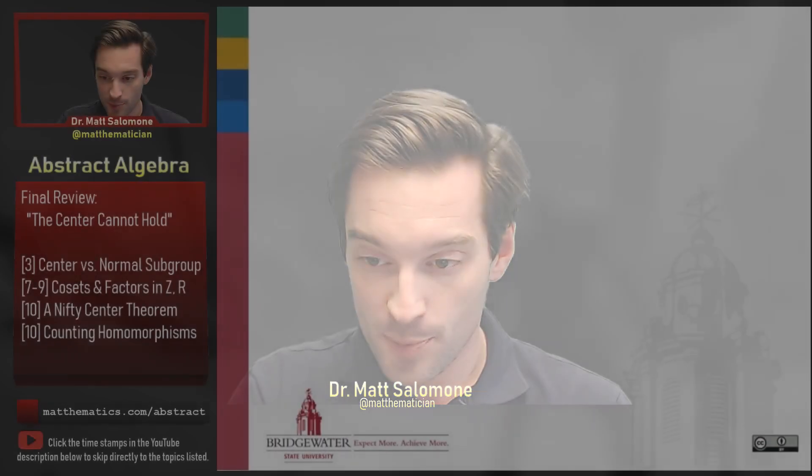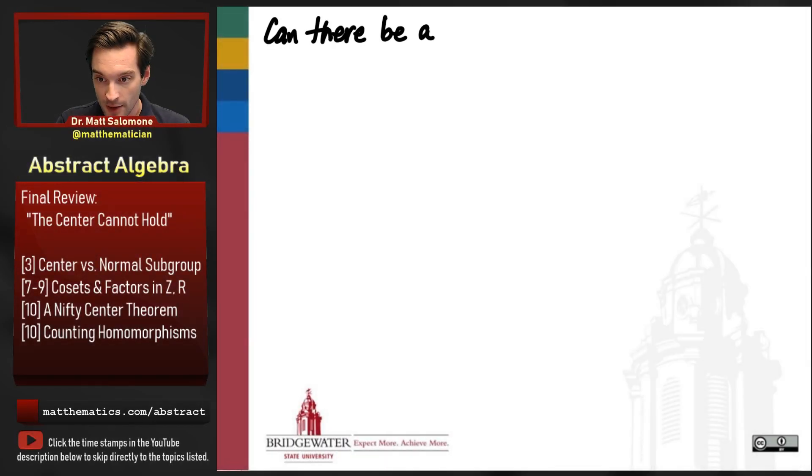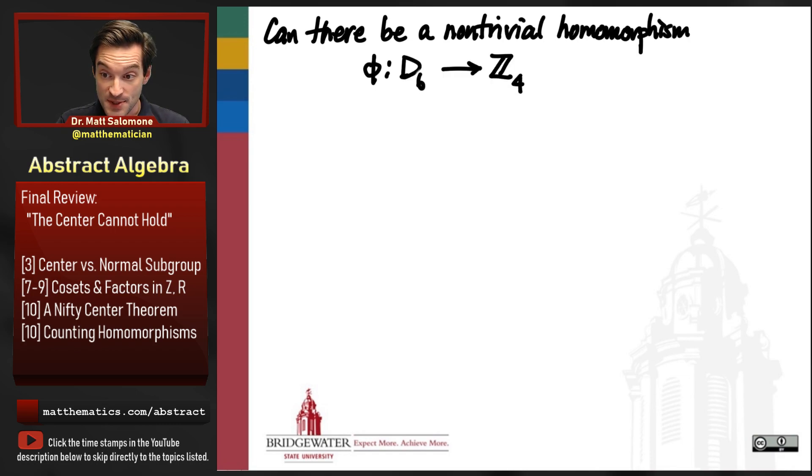To determine whether or not a non-trivial homomorphism may exist between two groups of interest. So here's the next problem that we'll tackle. Can there be a non-trivial homomorphism from the group D6 to the group Z4?